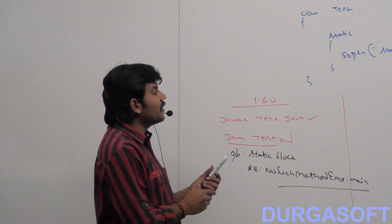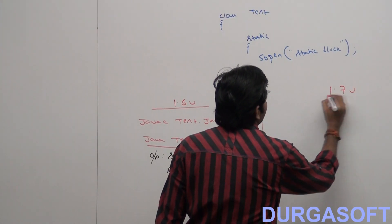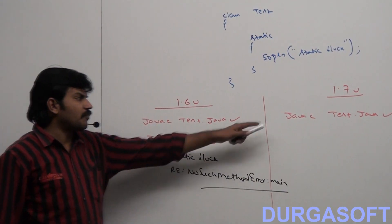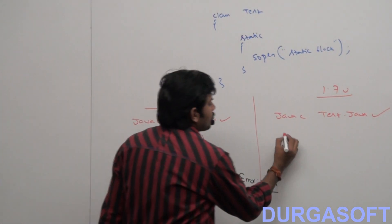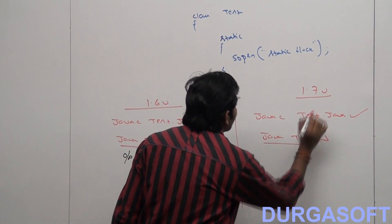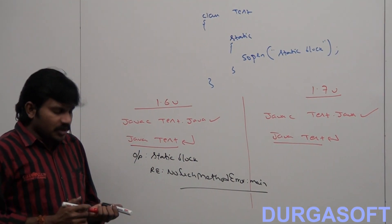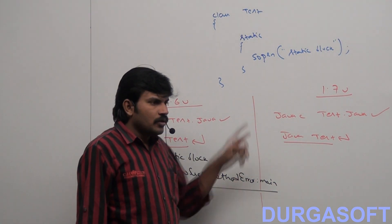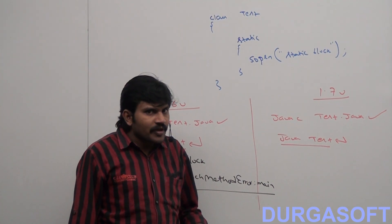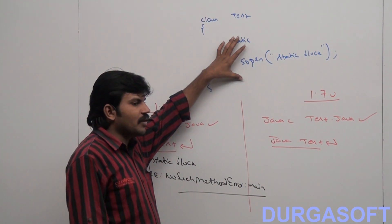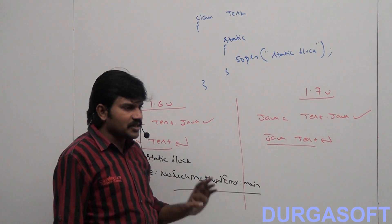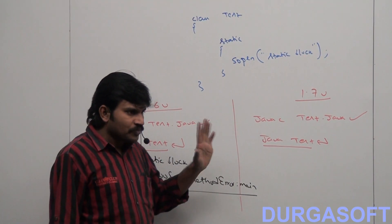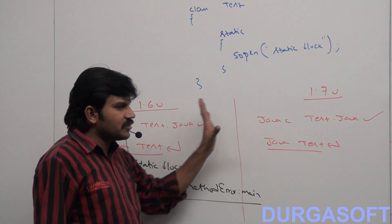But in the 1.7 version, what is the scenario? This is very important. When you run Java Test, immediately JVM asks whether the class has a main method or not. If you are not having main method — even though you have a static block — JVM will say: 'If the main method is not there, then I cannot start execution.' So from 1.7 version onwards, to start Java program execution, main method is mandatory.